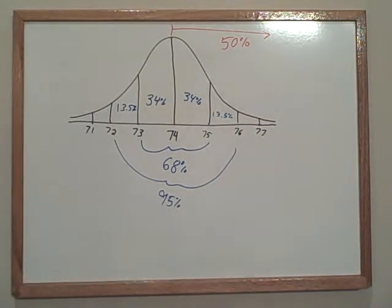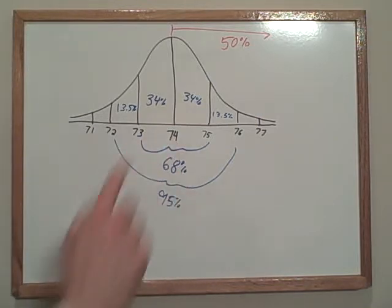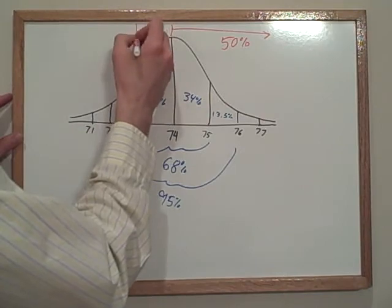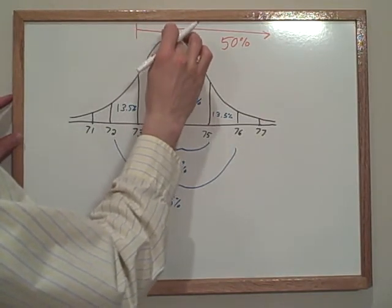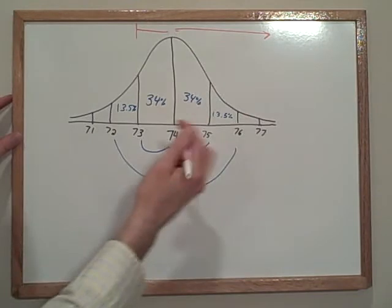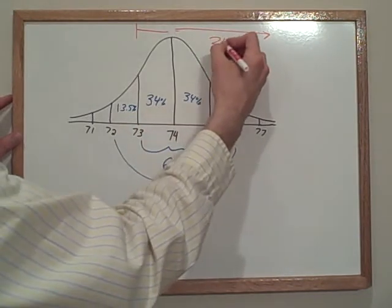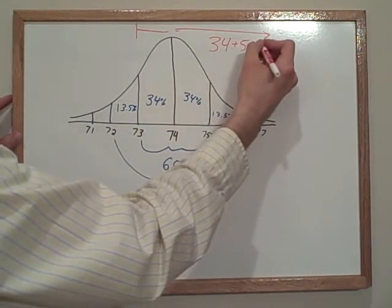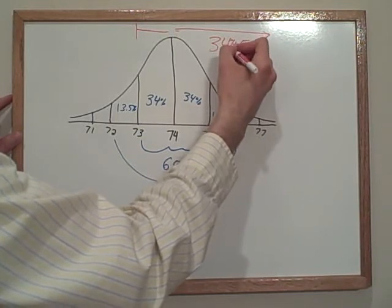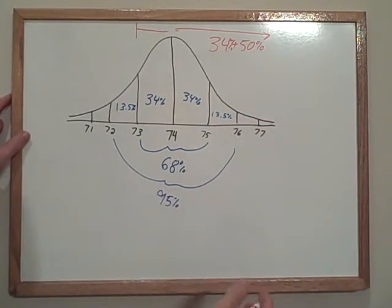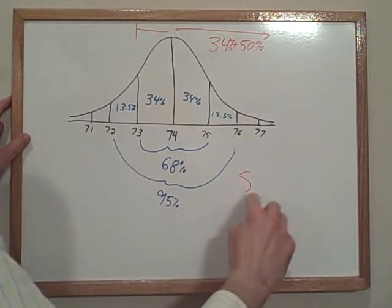So we've already got 50% of the football players that are 74 inches or taller. We want to know what happens from here over though, so it's not going to be 50%, it's actually going to be 34% plus 50%. 34% plus 50%, last time I checked, that would be 84%.